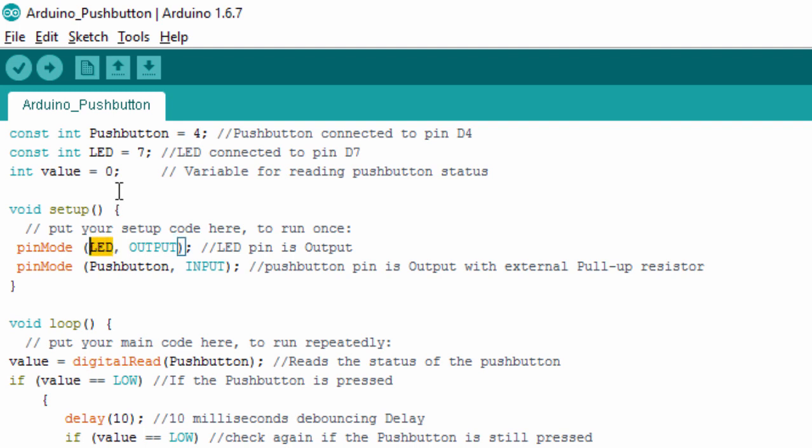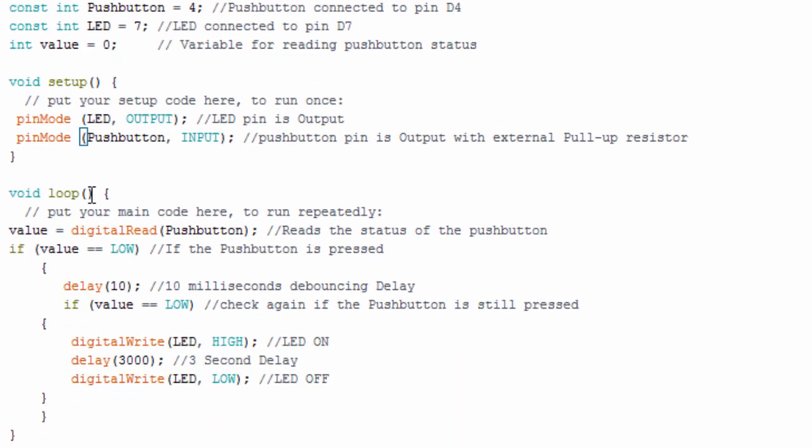Pin mode LED, which represents 7, it's going to be an output, because we're going to set D7 as an output. The other one is pin mode pushbutton input. Pushbutton represents 4, so we're going to set D4 as an input pin. And in our main loop, this is the code that is going to run repeatedly.